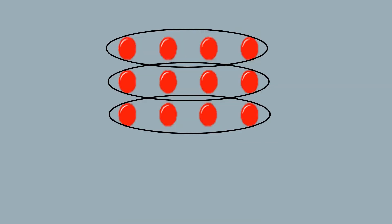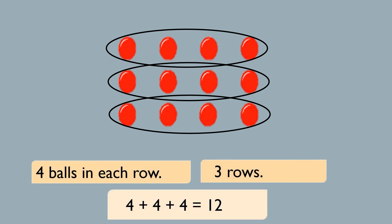Here I have grouped the balls in rows and there are 4 balls in each row. I will be adding 4 balls 3 times: 4 plus 4 plus 4, and my answer is 12. When you count each of these balls one by one, you will get to know that there are 12 balls in total.